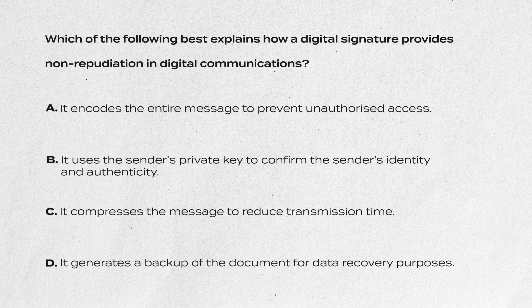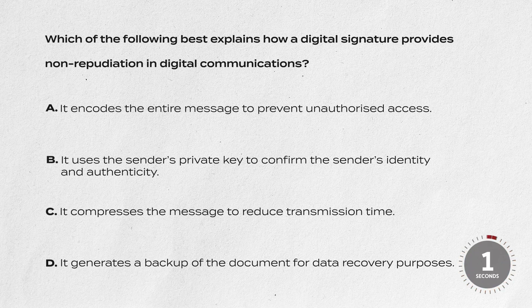Before we end, let's test your knowledge with a couple of quiz questions. Question 1: Which of the following best explains how a digital signature provides non-repudiation in digital communications? A. It encodes the entire message to prevent unauthorized access. B. It uses the sender's private key to confirm the sender's identity and authenticity. C. It compresses the message to reduce transmission time. Or D. It generates a backup of the document for data recovery purposes. The answer is B — it uses the sender's private key to confirm the sender's identity and authenticity. This is because the digital signature is created using the sender's private key, resulting in a unique signature. By decrypting it with the sender's public key, the sender's identity can be confirmed, as only the corresponding private key could have generated the signature.